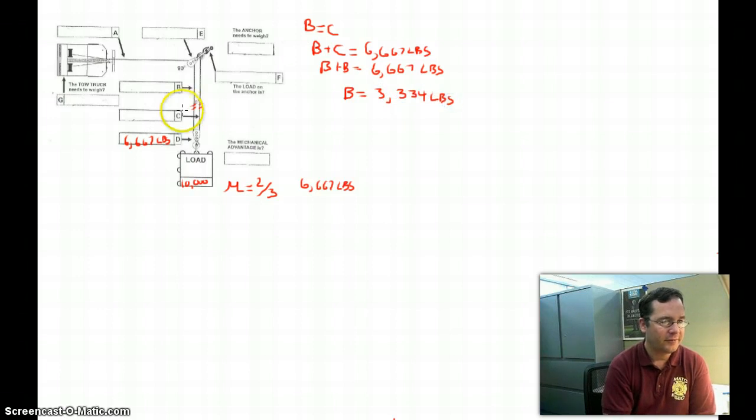And again, by definition, B and C are equal. So each of these is 3,334 pounds.